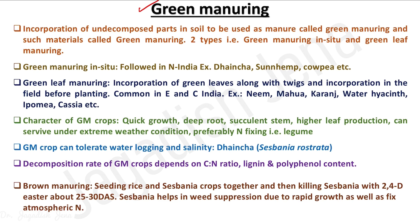Green manuring is basically the manuring of green plants — the plants raised in the field and incorporated in that same field for decomposition. In manuring, we collect different crop residues as well as animal excreta and use certain techniques to decompose them at a faster rate, so complex biomolecules are simplified to provide nutrients to the crop and improve soil physical properties and soil health.